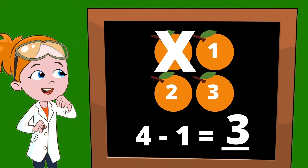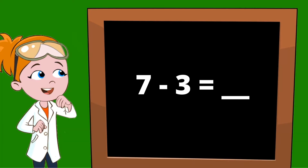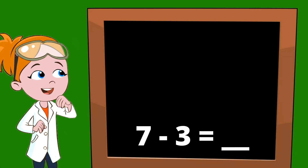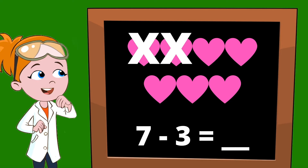Let's try another one. Let's do a bigger equation. How about 7 minus 3? Let's see how we can count to find this answer. According to our equation, we start with 7, so let's draw 7 hearts. Perfect. Our equation also says minus 3, so let's draw an X through 3 of our hearts. 1, 2, 3.